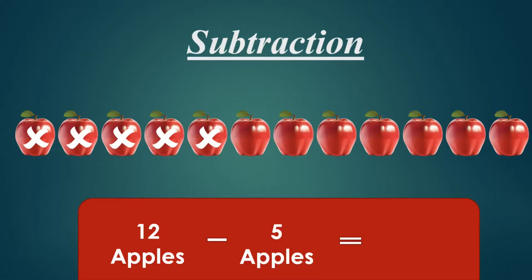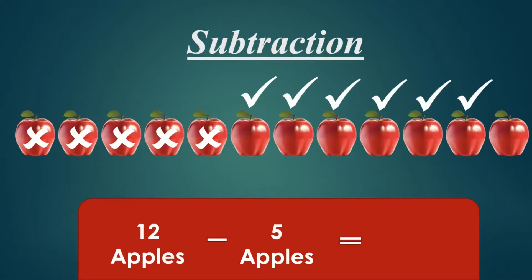Let's count how many apples are left. You can join with me. Let's start counting. Here we go: 1, 2, 3, 4, 5, 6, 7. 7 apples. So 12 apples minus 5 apples equals 7 apples.